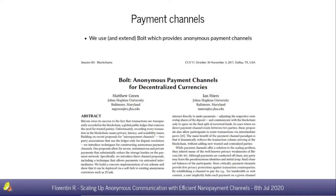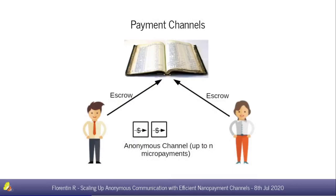To obtain unlinkability at the payment layer, we use as a starting point BOLT — the anonymous version of payment channels, made possible with some nice cryptographic tricks. BOLT helps us have long-term relationships on Tor because when receiving a payment, the relay will not be able to tell whether the payment is from the same user or another one; it can only tell if the payment is valid or not.